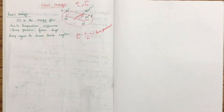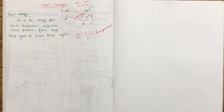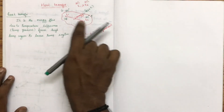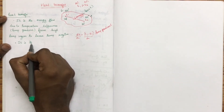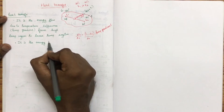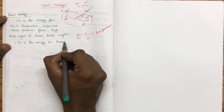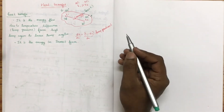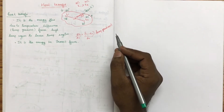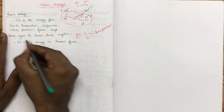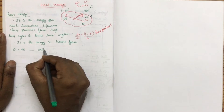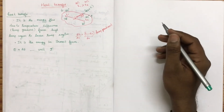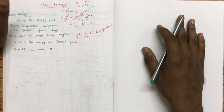Heat is a kind of energy form. It is expressed as q or dq. The unit of heat is joule. Heat is expressed in the unit of joule.